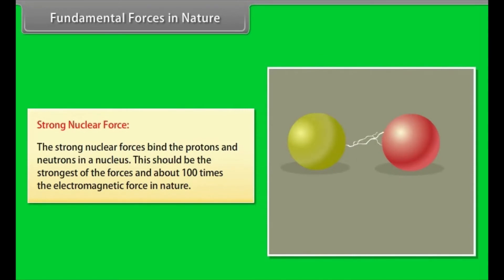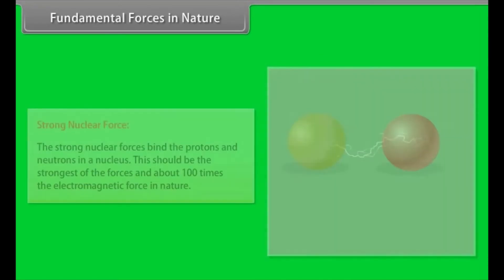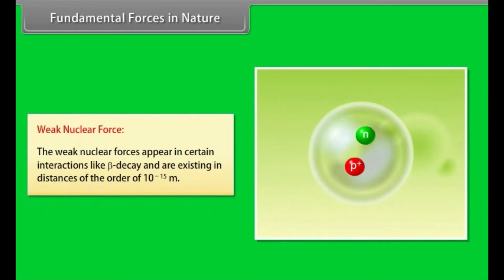The strong nuclear forces bind the protons and neutrons in a nucleus. This should be the strongest of the forces and about 100 times the electromagnetic force in nature. The weak nuclear forces appear in certain interactions like beta decay and are existing in distances of the order of 10 raised to the power minus 15 meter.